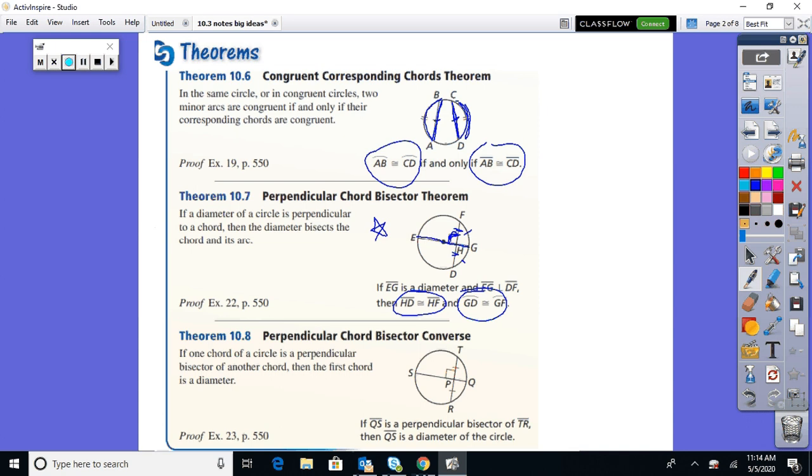And in 10.8, if one chord of the circle is perpendicular bisector of another, then the first chord is a diameter. So now it's kind of just like the reverse, the converse of it.